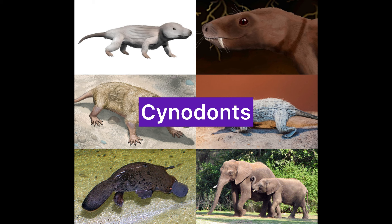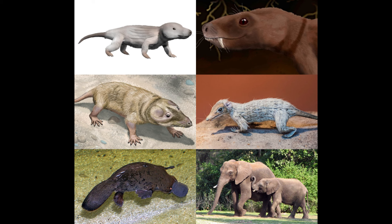Cynodonts were the most mammal-like of all therapsids and are considered direct ancestors of modern mammals. They appeared in the late Permian and exhibited numerous advanced features such as differentiated teeth, a more complex jaw structure, and evidence of fur. The evolution of the secondary palate was more pronounced, facilitating efficient respiration while chewing.